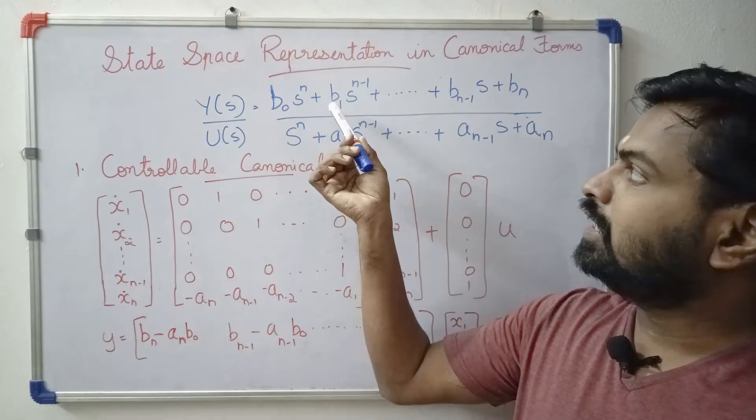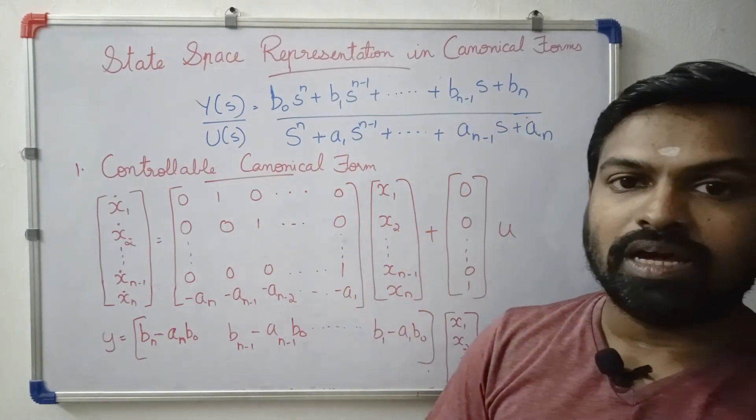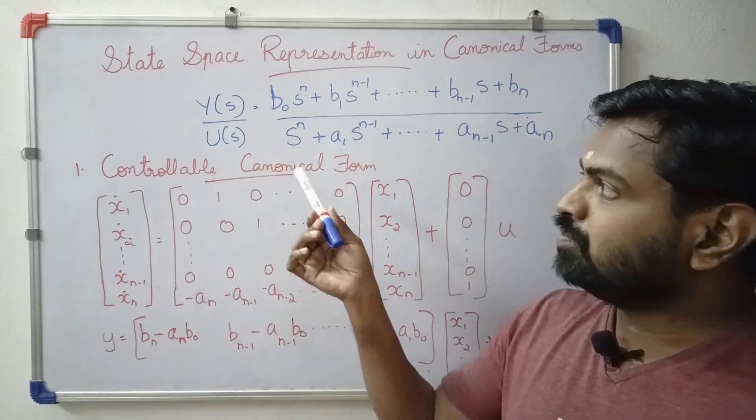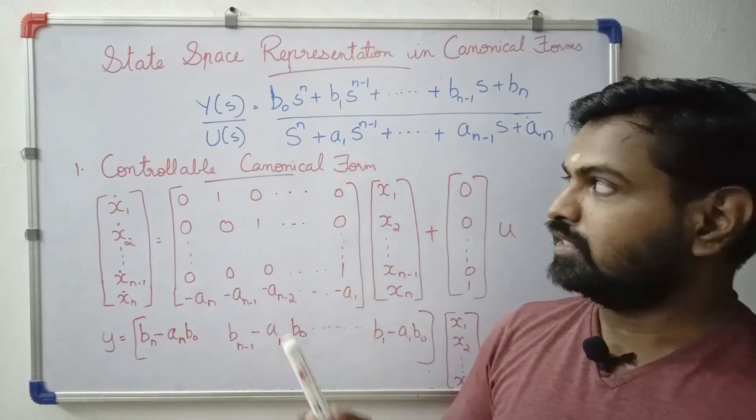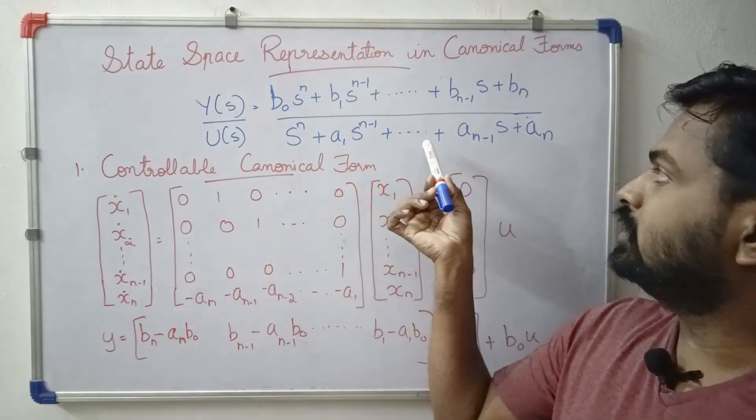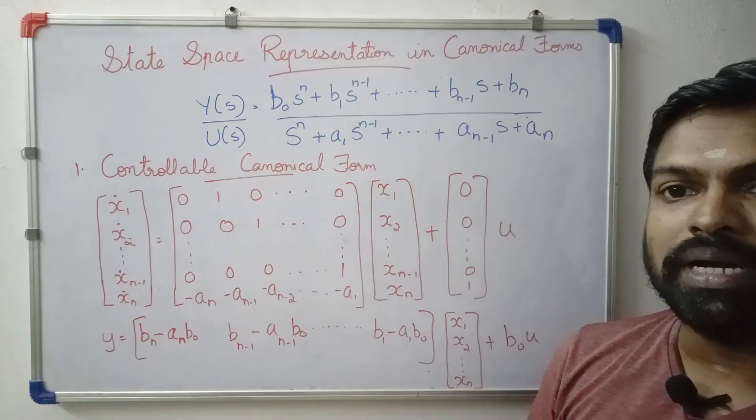We have a transfer function with coefficients b0, b1, b(n-1), bn, and we are talking about coefficients a1, a2, etc., an. We have a matrix form.